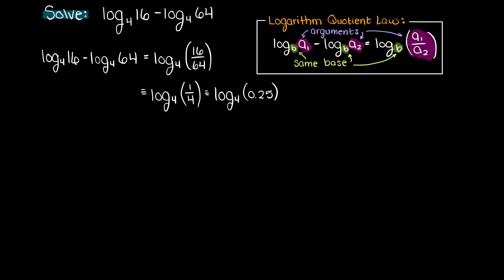So, we are left to find out what power can we raise 4 to to get 0.25? Well, raising 4 to the power of negative 1 is equal to 0.25.